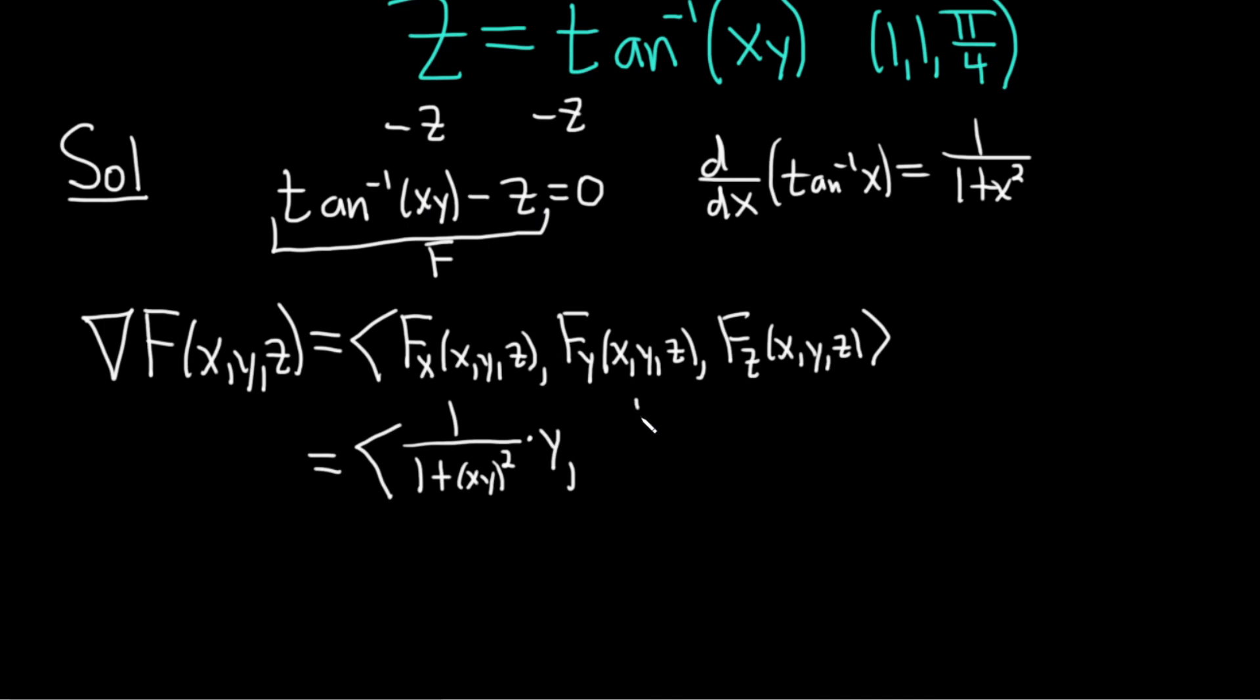Same thing here. The derivative of the outside function, which is arctan, is 1/(1 + (xy)²). You leave the inside piece untouched, which is xy, times the derivative of the inside. We're taking the partial with respect to y. So the derivative of y is 1. x is a constant, it hangs out. Lastly, the partial with respect to z. This is going to be 0. There's no z's to be found in this arctan function. So the derivative of negative z is negative 1. Really nice.